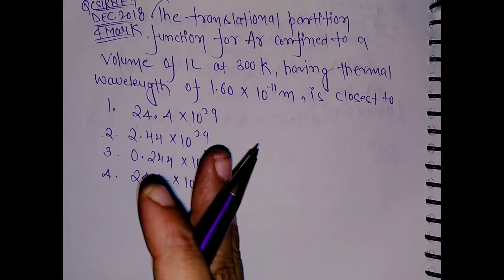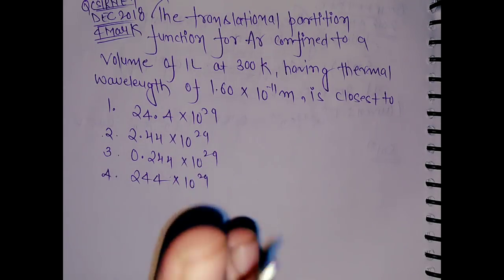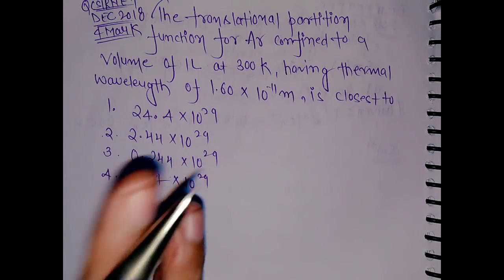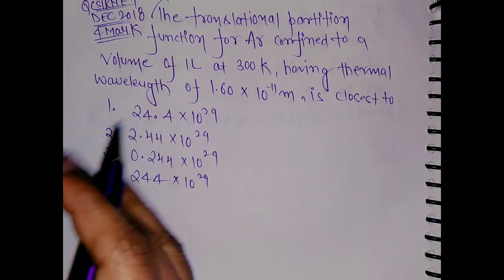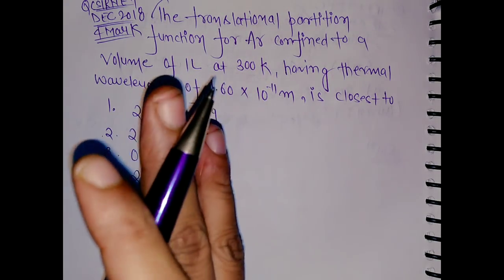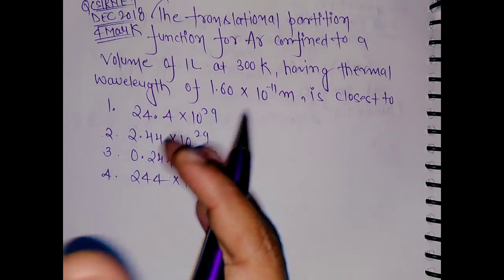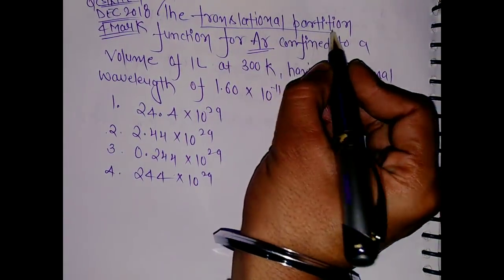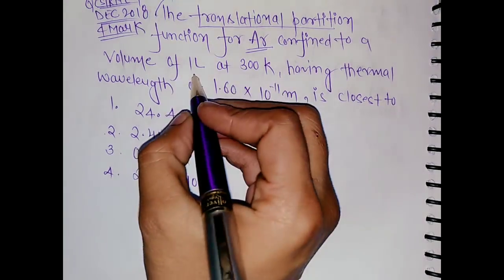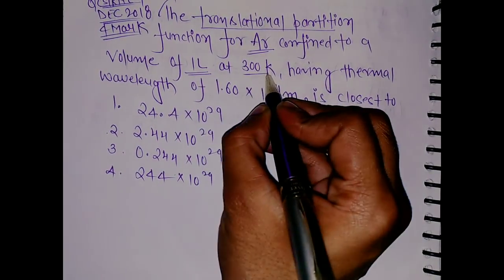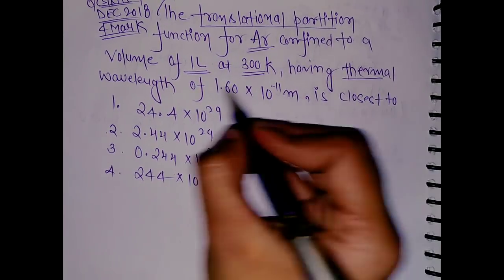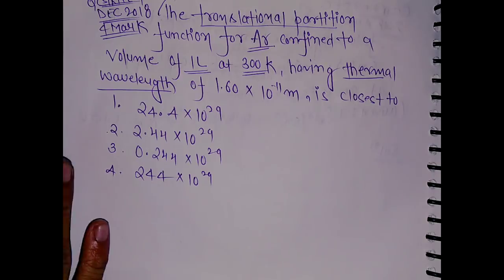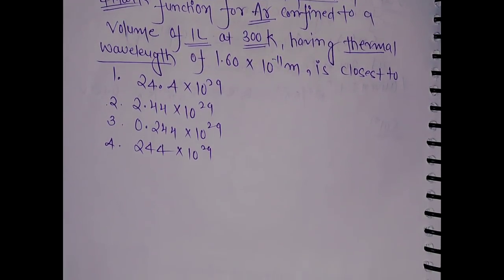Hello everyone, this question came in CSIRNet chemical sciences examination for four marks from statistical thermodynamics. The examination is asking about the translational partition function for argon. We have to calculate it given the volume, temperature, and thermal de Broglie wavelength.